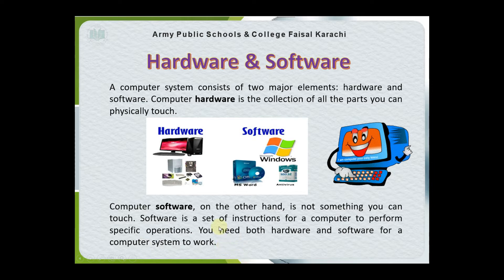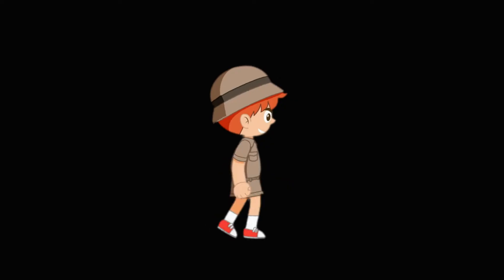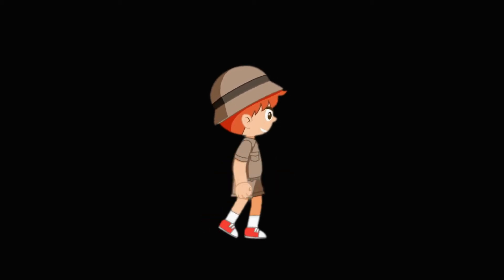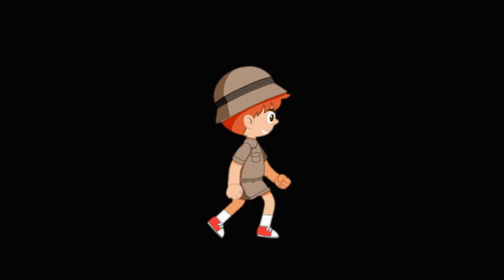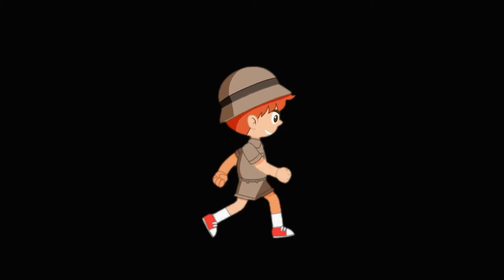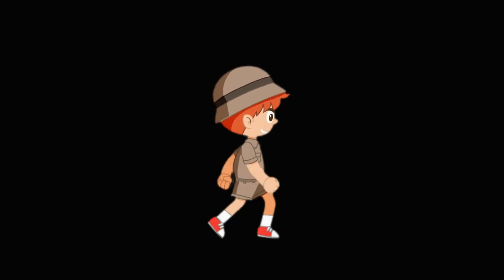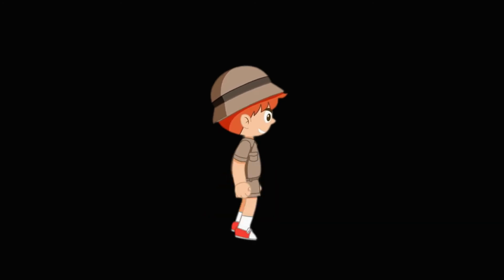Software includes programs that you need in order to operate your computer, such as your operating system. Another example: computer hardware is similar to the human body, and computer software is similar to the life in a human body. Without software, a computer is useless.